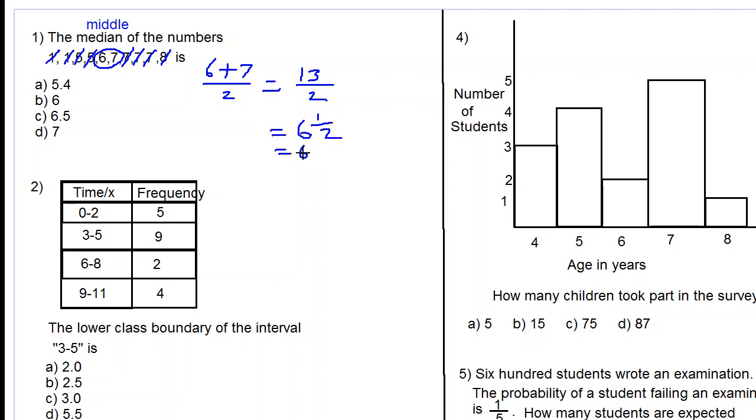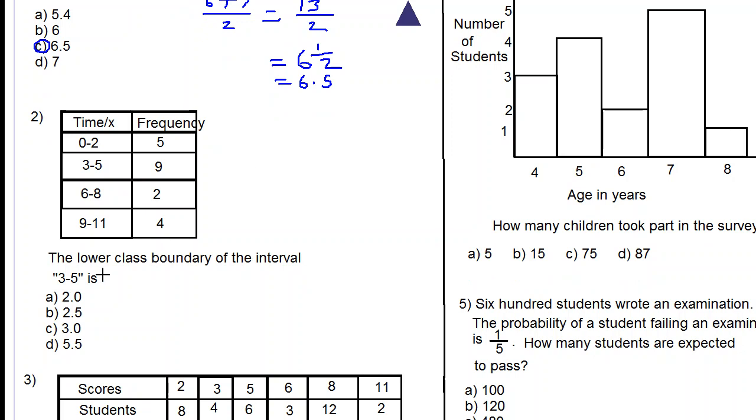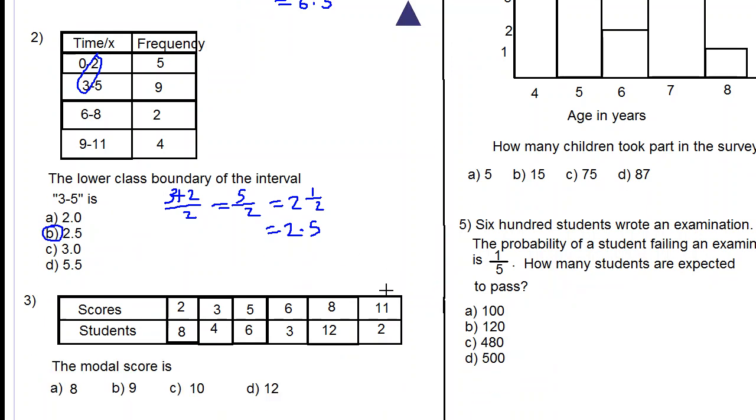Our answer is C. Let's move on to number 2. We have a frequency table here: time in minutes. We are asked, the lower class boundary of the interval 3-5 is? To get a lower class boundary, we add 3 to the preceded number, so we add 3 plus 2 and divide by 2, so we get 5 divided by 2, which is 2.5.